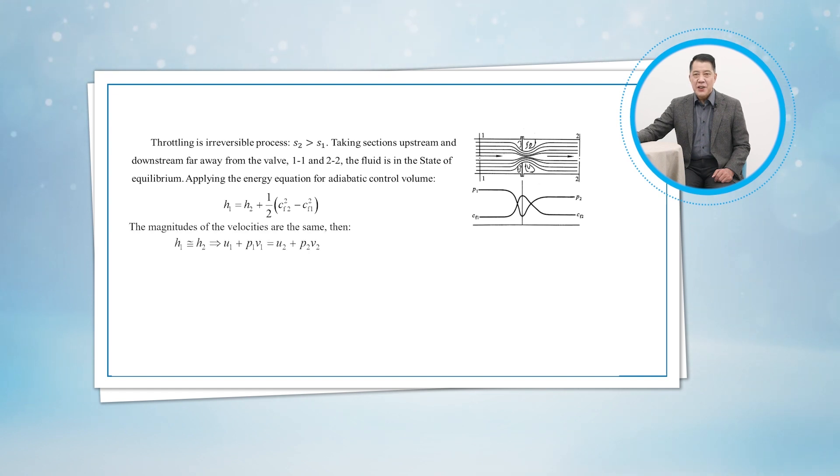The magnitudes of the velocities are the same, and then we have h1 = h2. For this reason, a throttling valve is sometimes called an isenthalpic device.